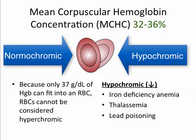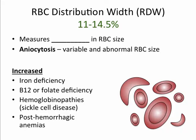The red blood cell distribution width, or RDW, measures variation in red blood cell size. Anisocytosis is a term used to describe variable and abnormal red blood cell sizes. The RDW can be increased in iron deficiency, B12 or folate deficiency, hemoglobinopathies such as sickle cell anemia, and post-hemorrhagic anemias.